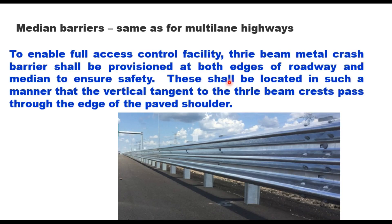To enable full access control facility, high beam metal crest barrier shall be provisioned at both edges of the roadway and median to ensure safety, and these shall be located such that the vertical tangent to the high beam crest passes through the edge of the paved shoulder.